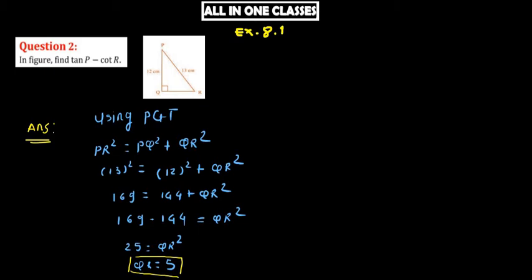So the value is 5. Now let's find tan P minus cot R.